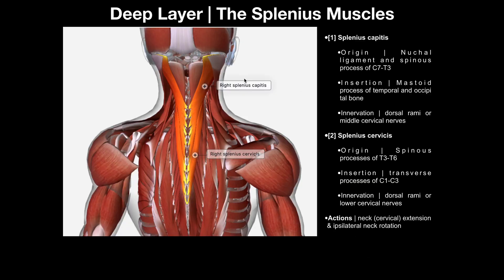So splenius capitis originates on the nuchal ligament, and then also on the spinous processes from C7 — where the nuchal ligament terminates — down to T3. It's going to insert on the mastoid process and the occiput. Inferior to the splenius capitis we have the splenius cervicus, which is inferior and therefore does not insert on the occiput, so it does not bear the name capitis.